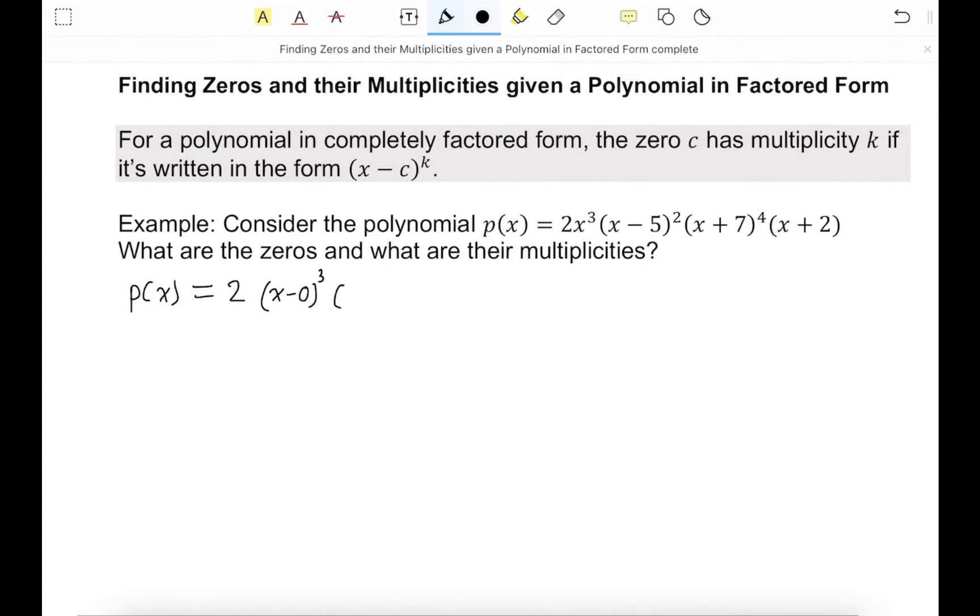We have x minus 5 squared. This one is x plus 7. We can write that as x minus negative 7 to the 4th. And x plus 2 is x minus negative 2. There's an invisible one here.